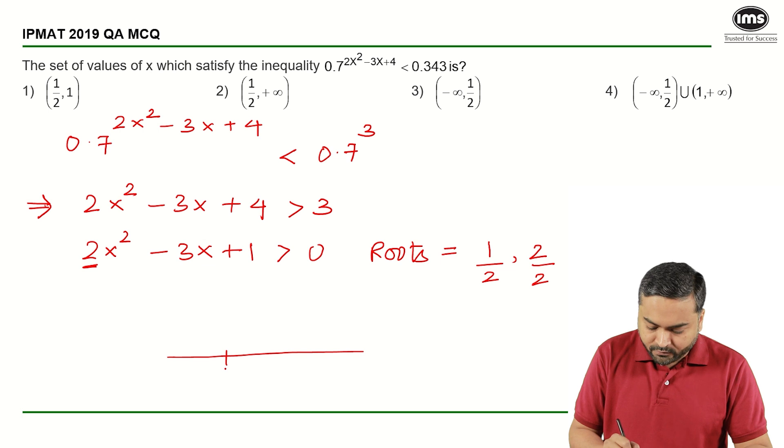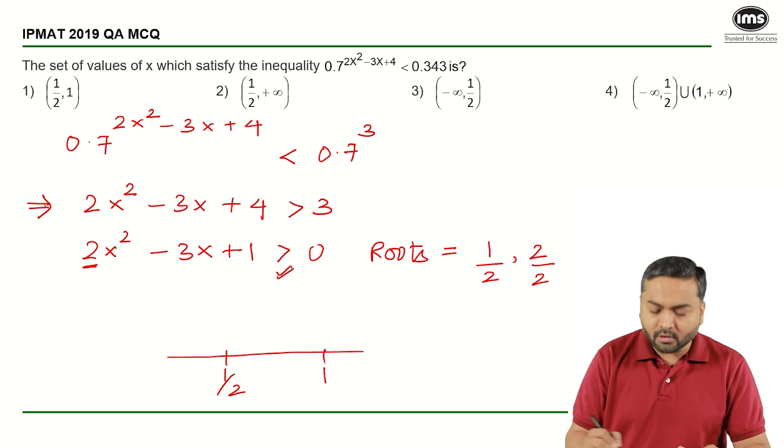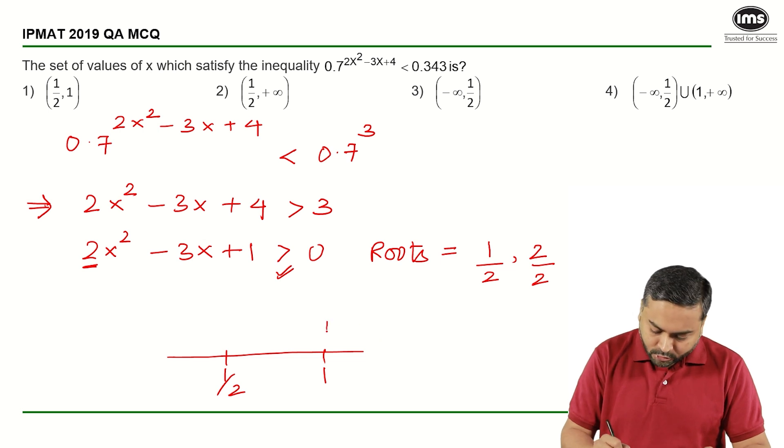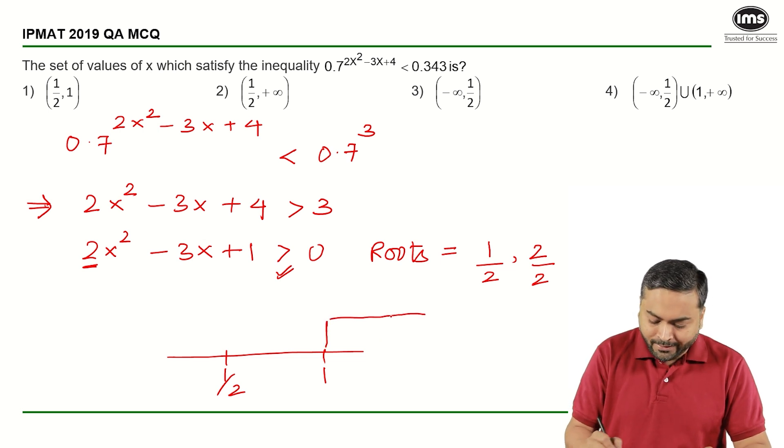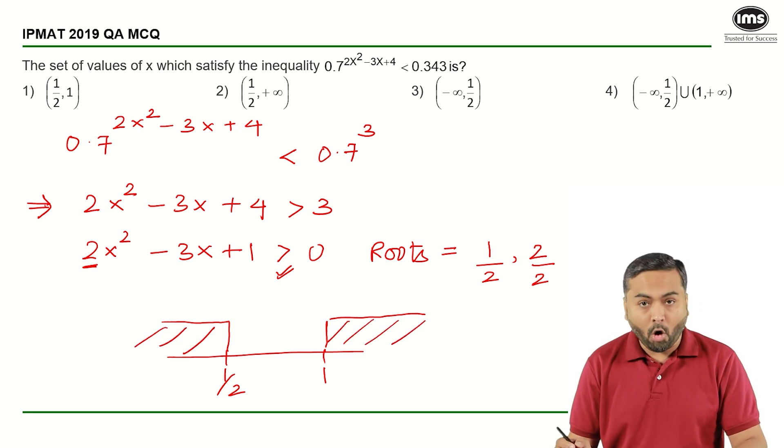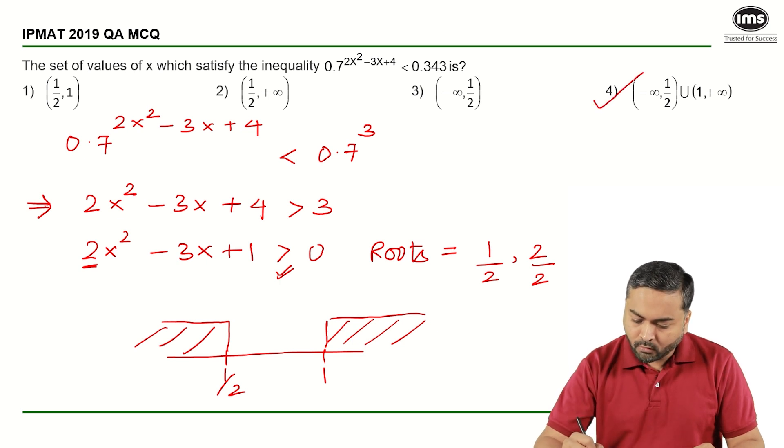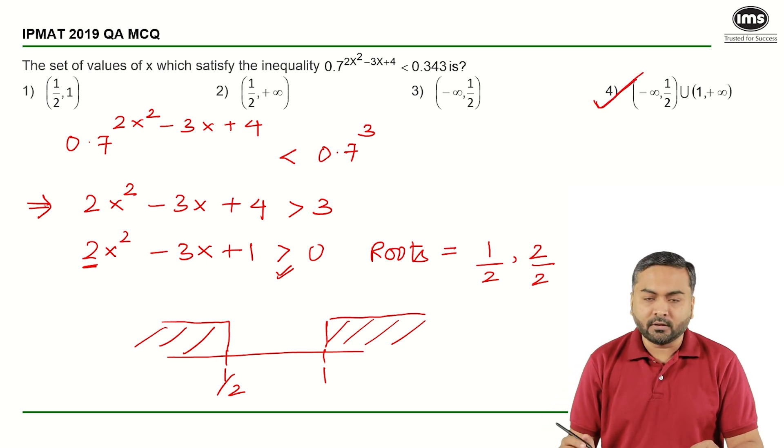Now if these are the roots and I have a greater than sign here, the expected region should be an unbounded region like this. This is how my range would look like. So all the values that fall in this range satisfy the given inequality and that is your fourth option.